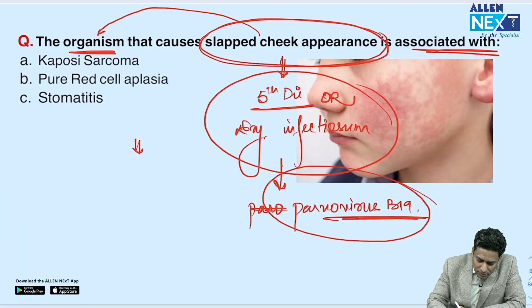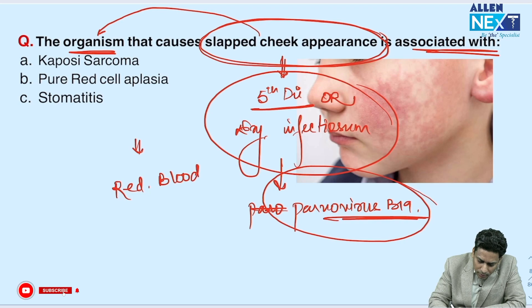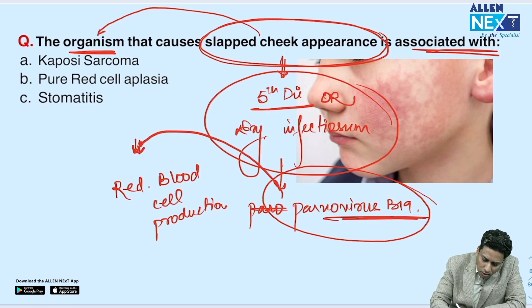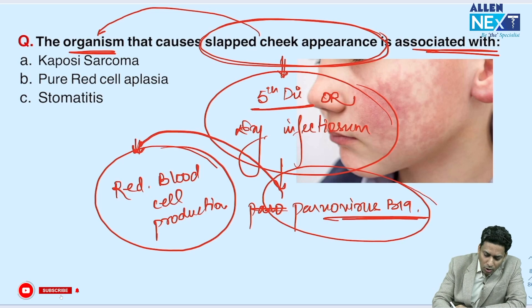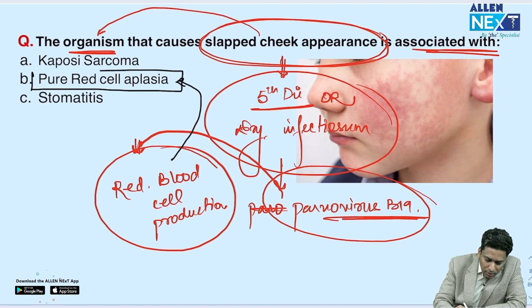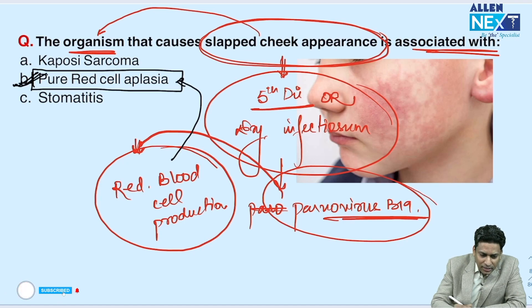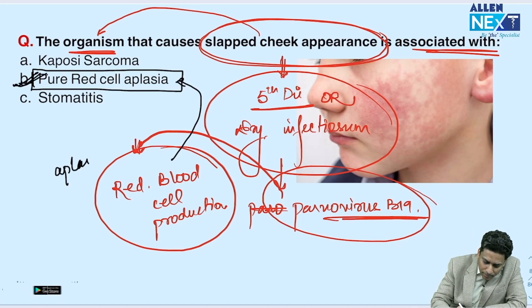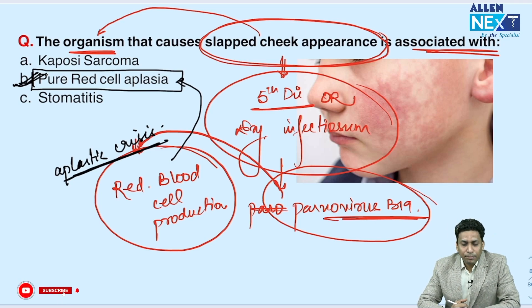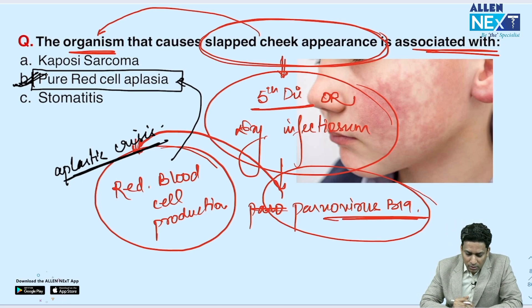Parvovirus B19 causes cessation of red blood cell production, which is why it can cause pure red cell aplasia. This was the answer to that question — pure red cell aplasia or red cell aplasia.